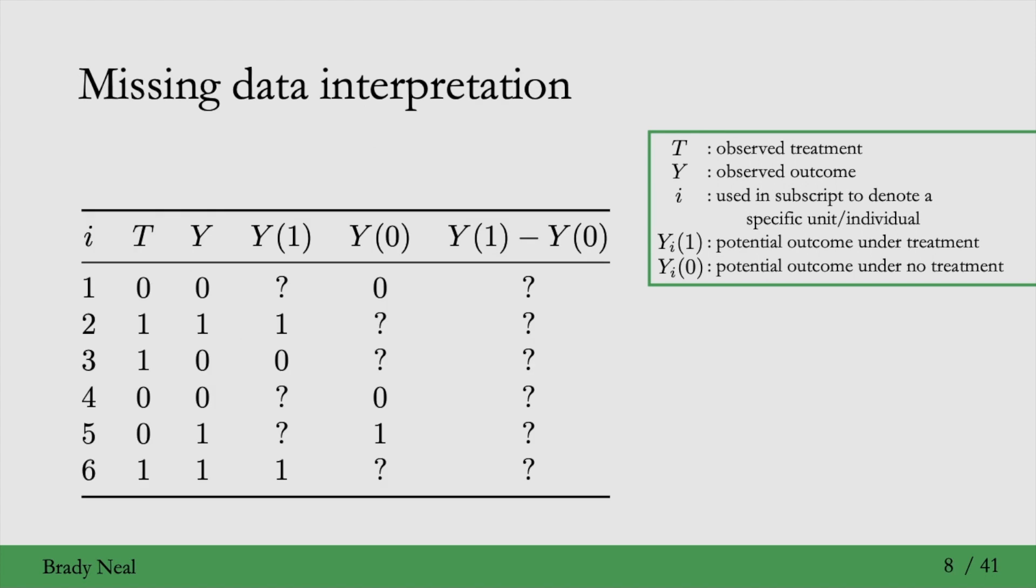This fundamental problem can also be interpreted as a missing data problem. So in this table, we have I is the specific individual, the unit. T is the treatment that they receive. And Y is the outcome that they observe.